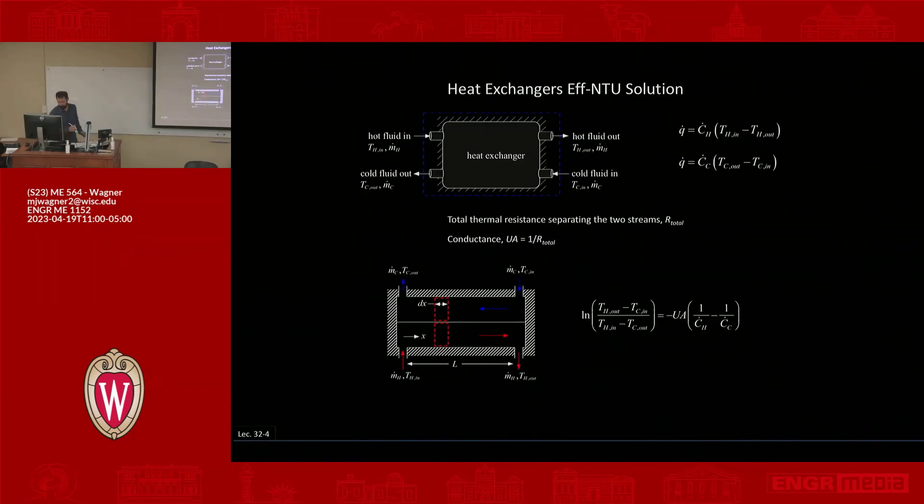To summarize where we stand now, we have our energy balance on the hot fluid. That is, Q dot is equal to C dot H times the temperature difference. C dot H is specific heat of hot fluid times mass flow of hot fluid.